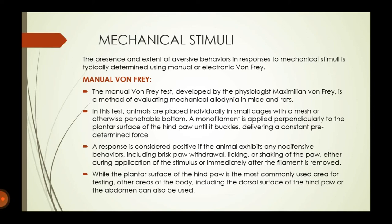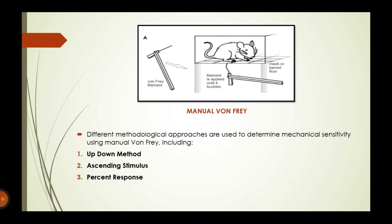The plantar surface of the hind paw is the most commonly used area for testing, though other areas including the dorsal surface of the hind paw or the abdomen can also be used. As seen in the picture, the filament is applied through the space between the cage until the animal shows a response.